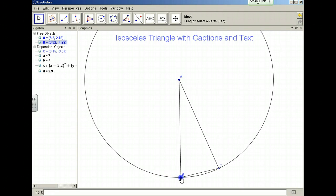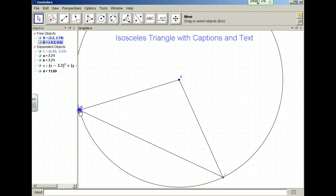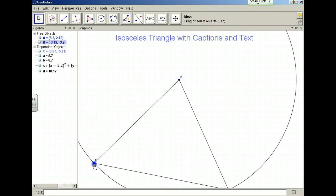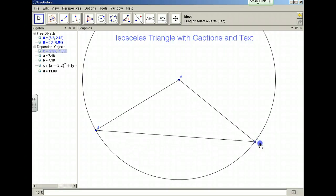Or I can make a wide isosceles triangle. Anything I'd like to do, I can certainly move point C as well, so I think I'll make a nice wide isosceles triangle here.